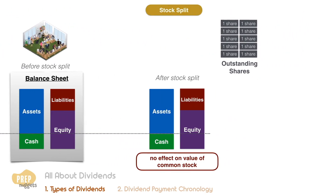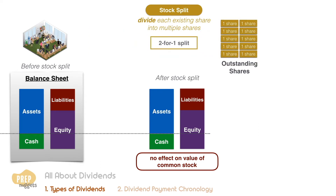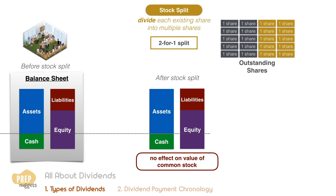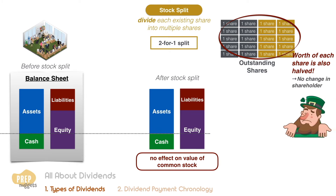Stock splits and reverse stock splits are similar to stock dividends in that they have no economic effect on the company or shareholders. Stock splits, which are more common than stock dividends, divide each existing share into multiple shares, creating more shares. Splits are expressed as a ratio. In a two-for-one stock split, each old share is split into two new shares, so the total number of outstanding shares is doubled to 20. There are now more shares, but the price of each share will drop correspondingly, so there is no change in the owner's wealth.